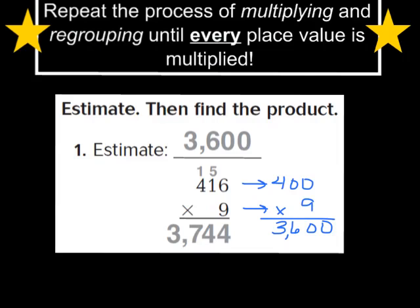My next step is to multiply by the tens. I'm going to take my 9 and multiply it by the 1, which is in the tens place. 9 times 1 is 9, but I now have to add my regrouped 5. So 9 plus 5 gives me 14. I write down my 4 and regroup my 1. Now I have to multiply by the hundreds — 9 times 4 is 36, plus my regrouped 1 gives me 37. So I write down 37, and my answer turns out to be 3,744.